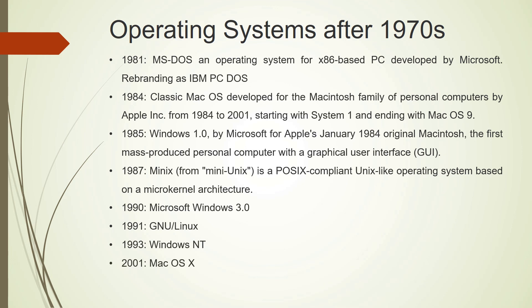In 2001, Mac OS X was released — previously it had been System 1 through 9 from 1984, and now it became Mac OS 10. In 2007 came the operating system from Apple for their iPhones and iPads: iOS. The revolution in mobile phones came with the Android operating system.